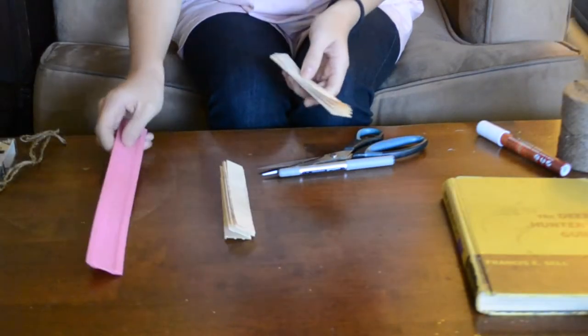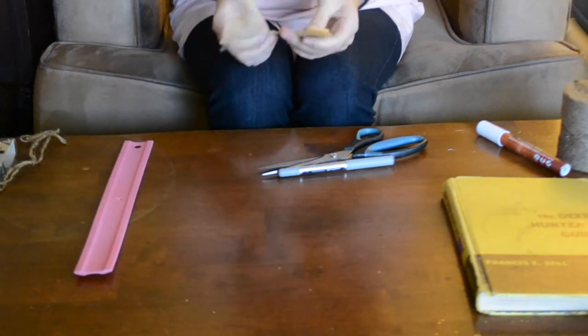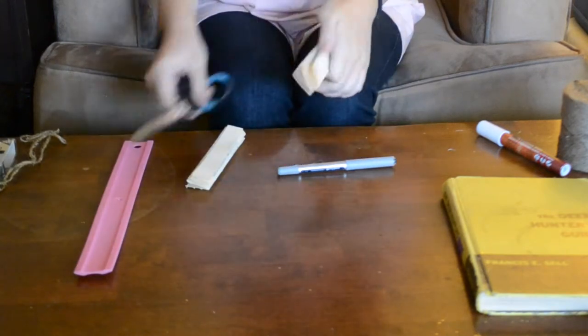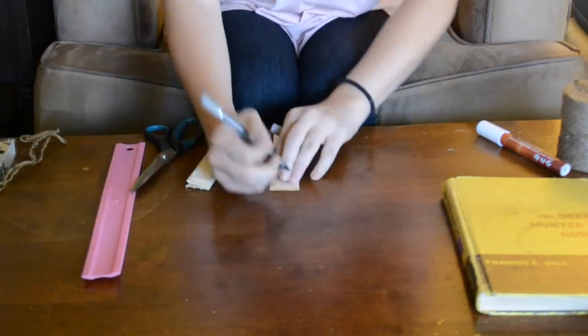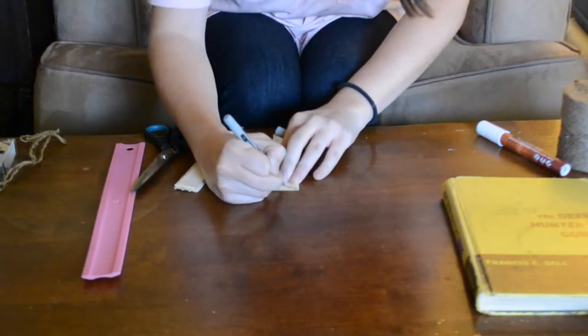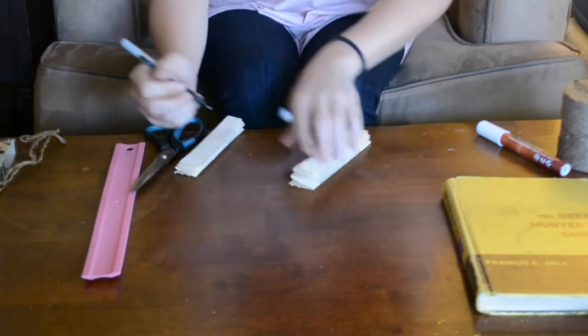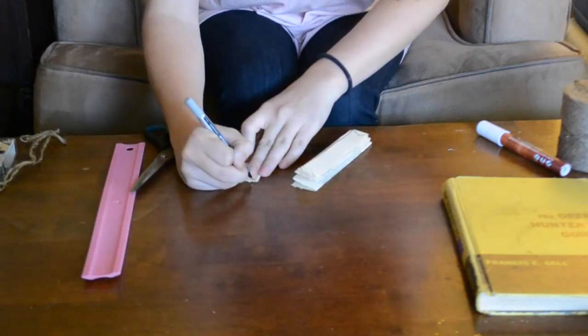Once you finish folding both of your pieces of paper, we're going to go ahead and do an inverse V on the top, but we're going to cut it off. So I'm just going to sketch that on with a pen, and we're going to get a nice V shape. I'm going to do the same on the other piece of paper.